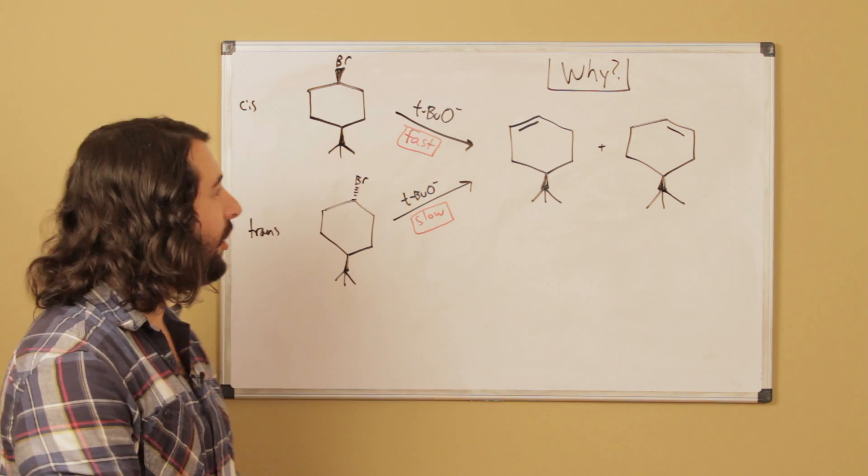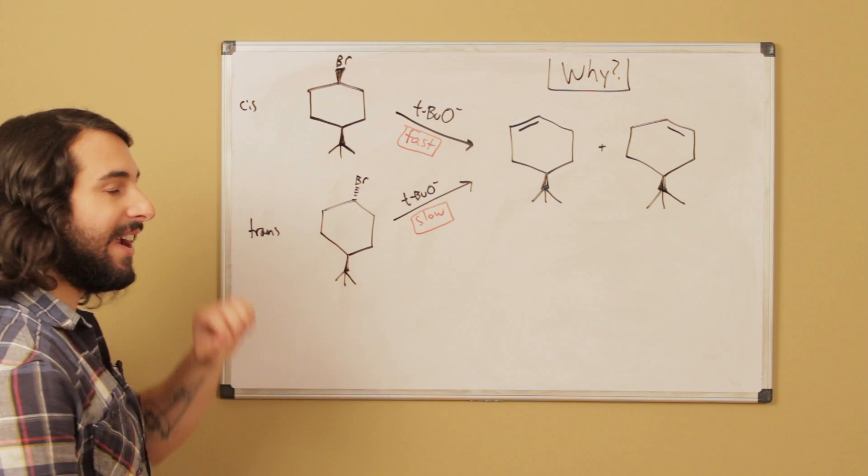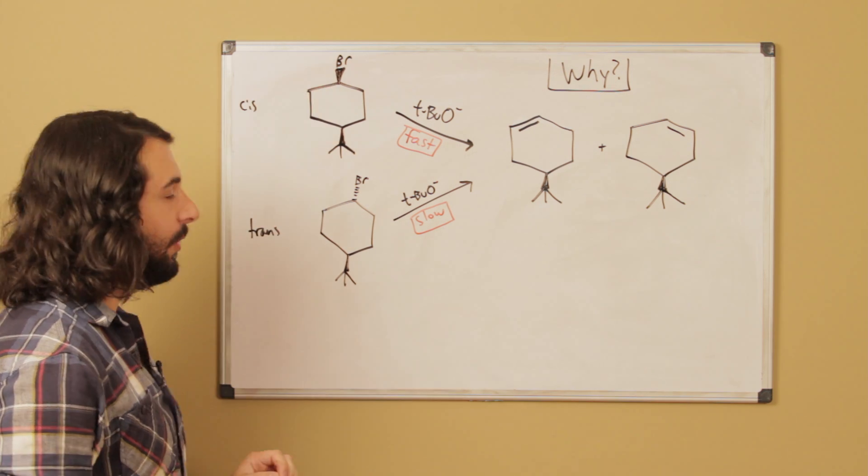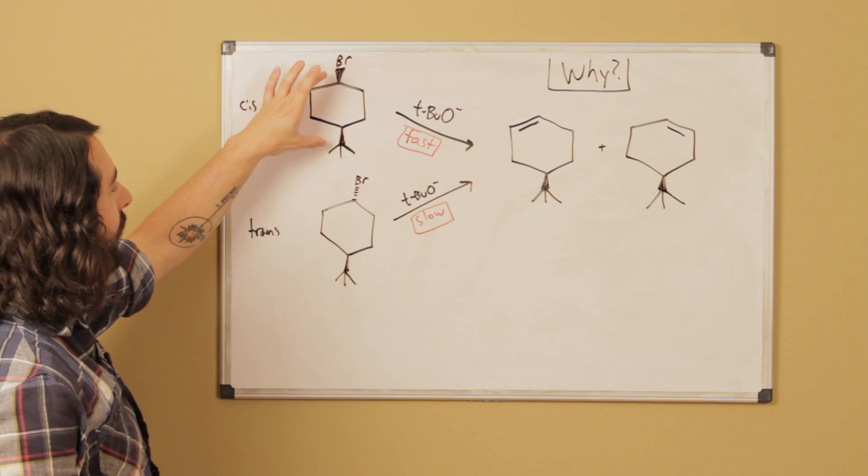Okay guys, for today's problem we're going to look at this reaction. We have two stereoisomers - these two molecules both have a bromo group and a tert-butyl group, but on this compound those are cis.